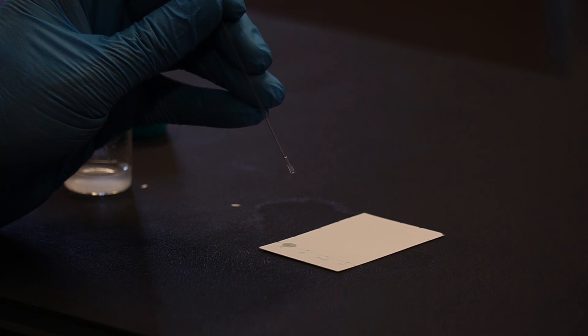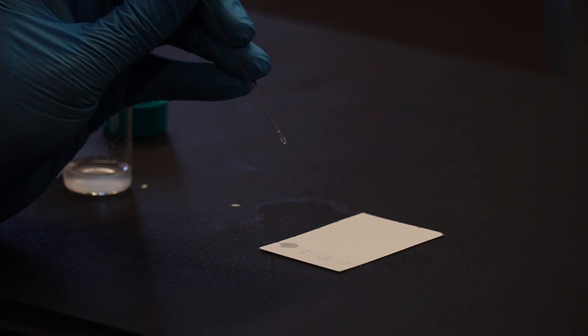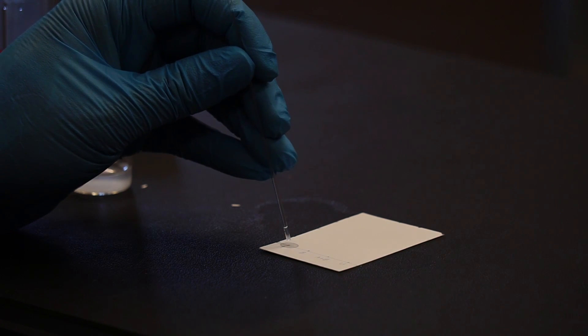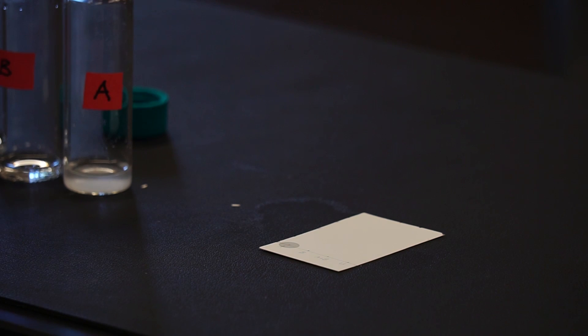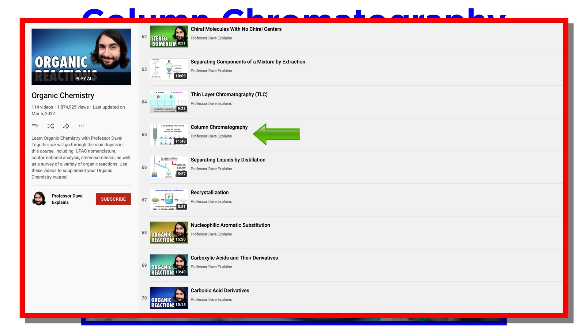But for TLC, we are only able to separate the tiny bit of the mixture that is spotted onto the plate. We will often want to perform chromatography on large samples. For this we will need column chromatography, a commonly used technique in chemistry, biology, and industry, which we have covered from a conceptual standpoint over in the lecture-based series, so be sure to review that video for additional context.